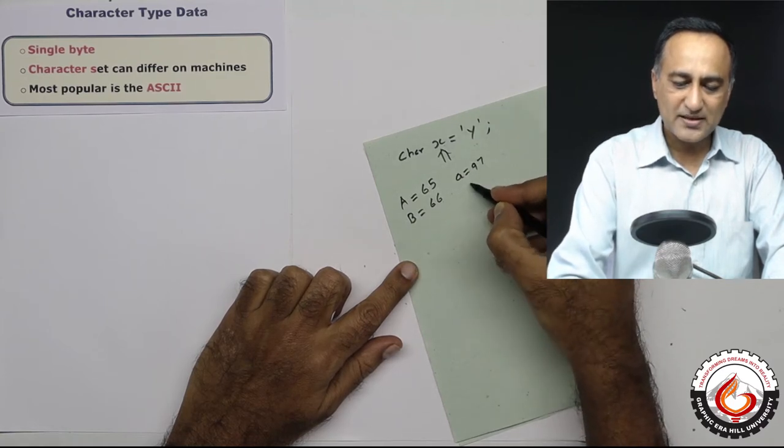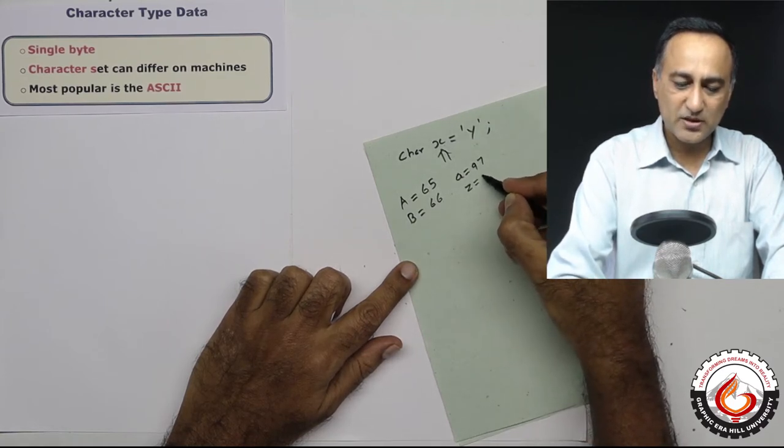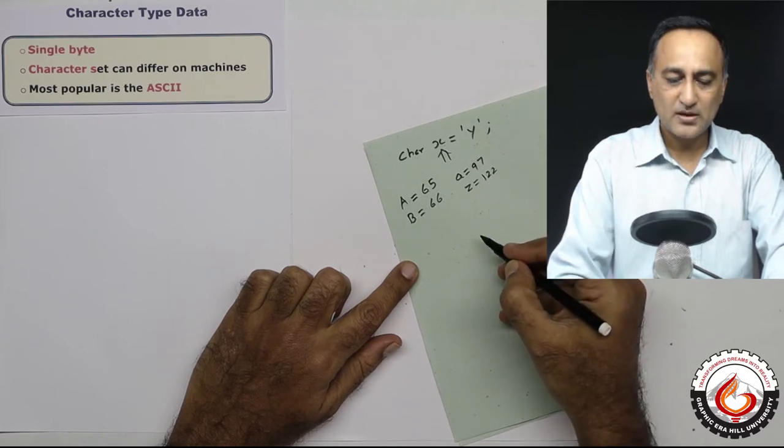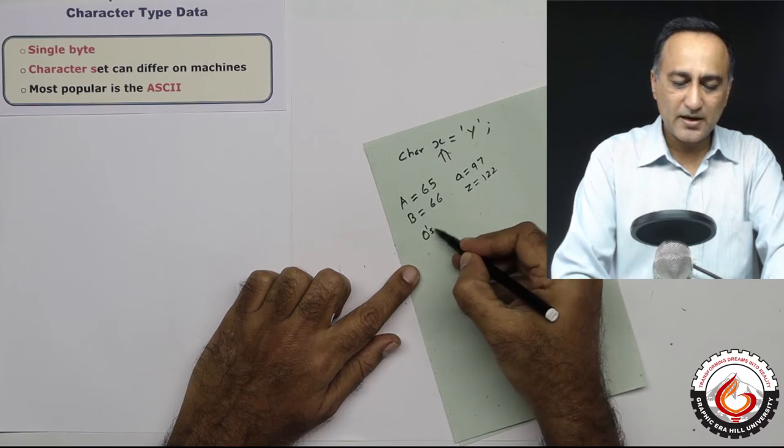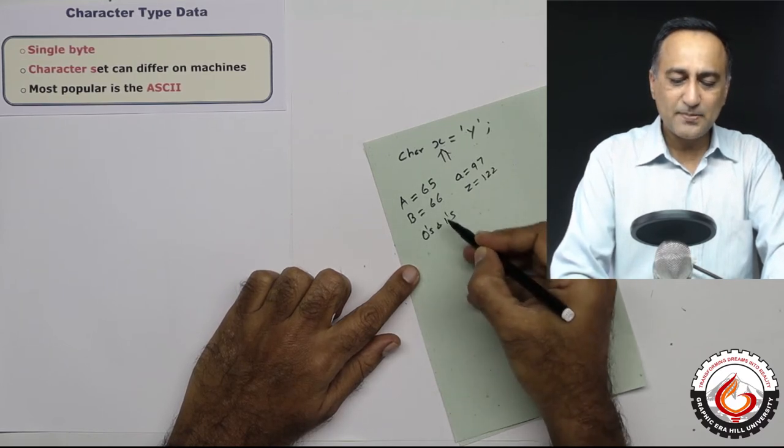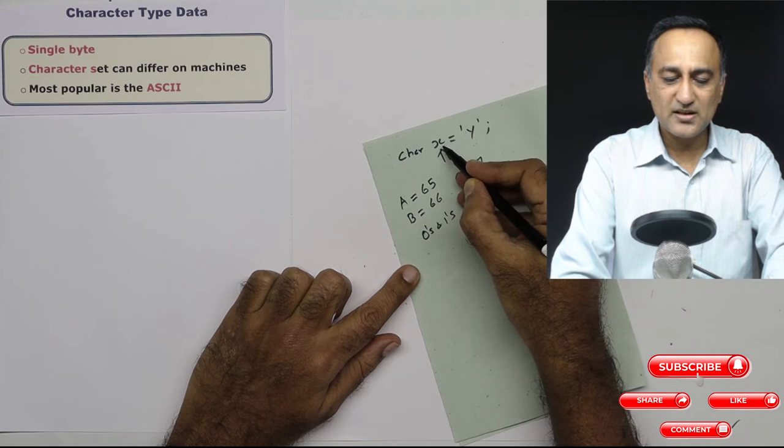Small A is represented with 97. Small Z is represented with 122. So using this representation, 65 is converted into zeros and ones. And that binary representation is used to represent A.